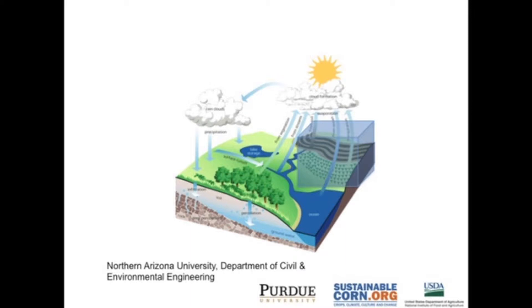We can pick up at any point in this cycle and follow the path of water through the natural system. We might start with water in the atmosphere forming precipitation that falls to the land surface. At the land surface, that's partitioned — some might run off as overland flow, some infiltrates into the soil as soil moisture storage, it might recharge groundwater, and all of that might work its way horizontally into the streams and lakes and rivers. By far the largest portion goes back into the atmosphere as evapotranspiration.